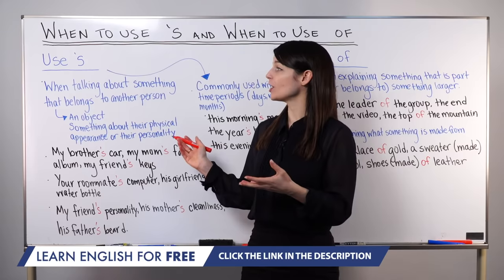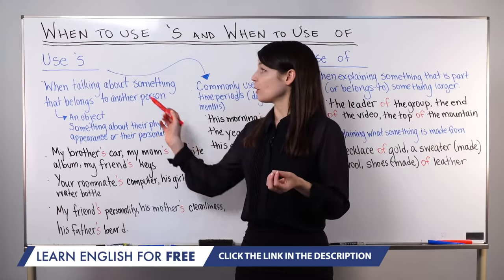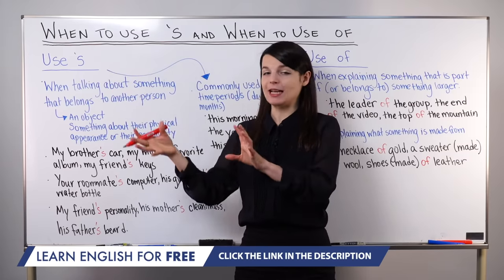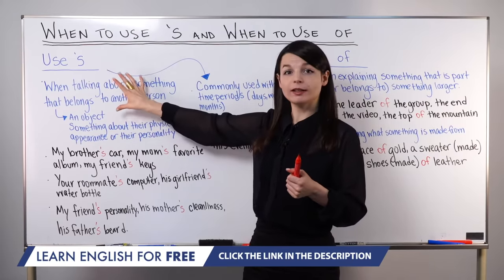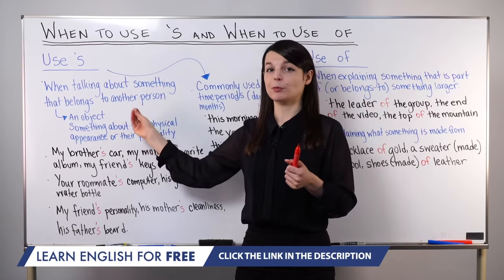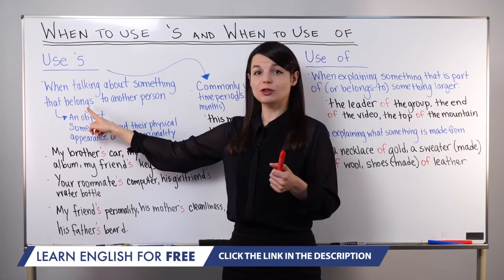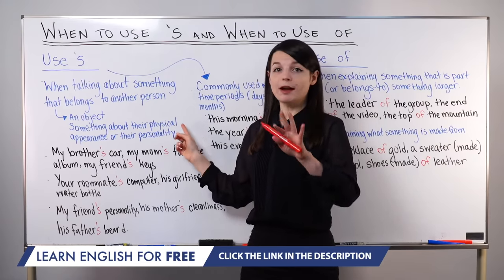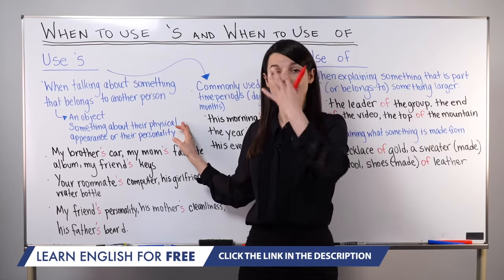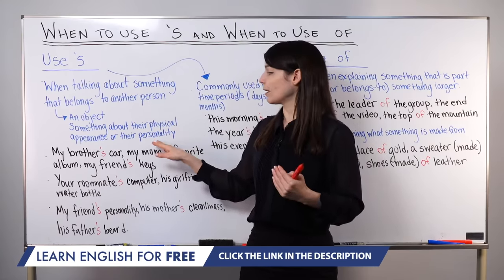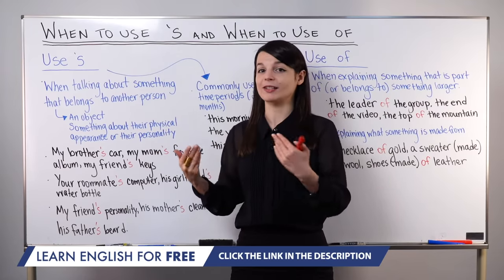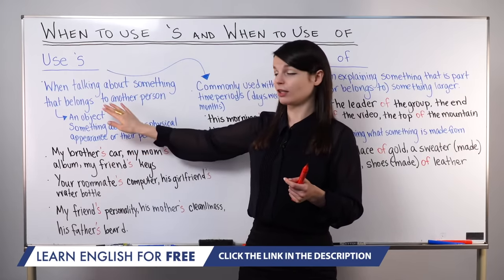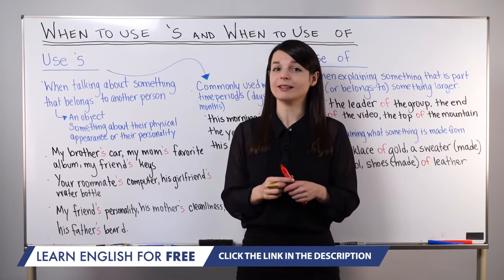First, I want to talk about the situations when we use apostrophe S. We commonly refer to this as the possessive form. We attach apostrophe S to some noun or a noun phrase. We use apostrophe S when we're talking about something that belongs to another person — this can mean an object like a pen or a shirt, or something about that person's physical appearance, or their personality. Let's look at some examples.